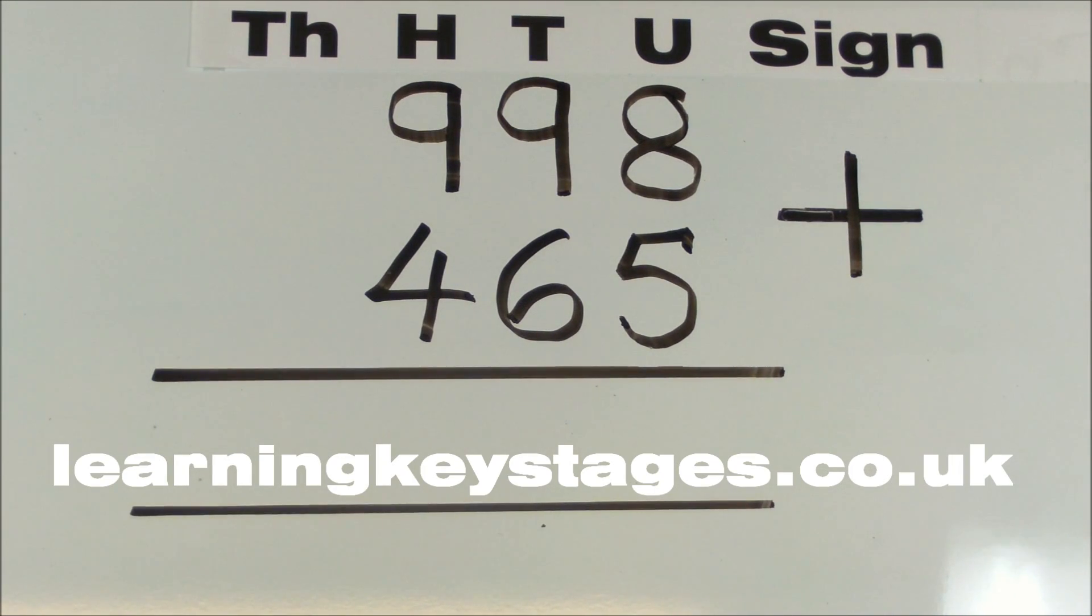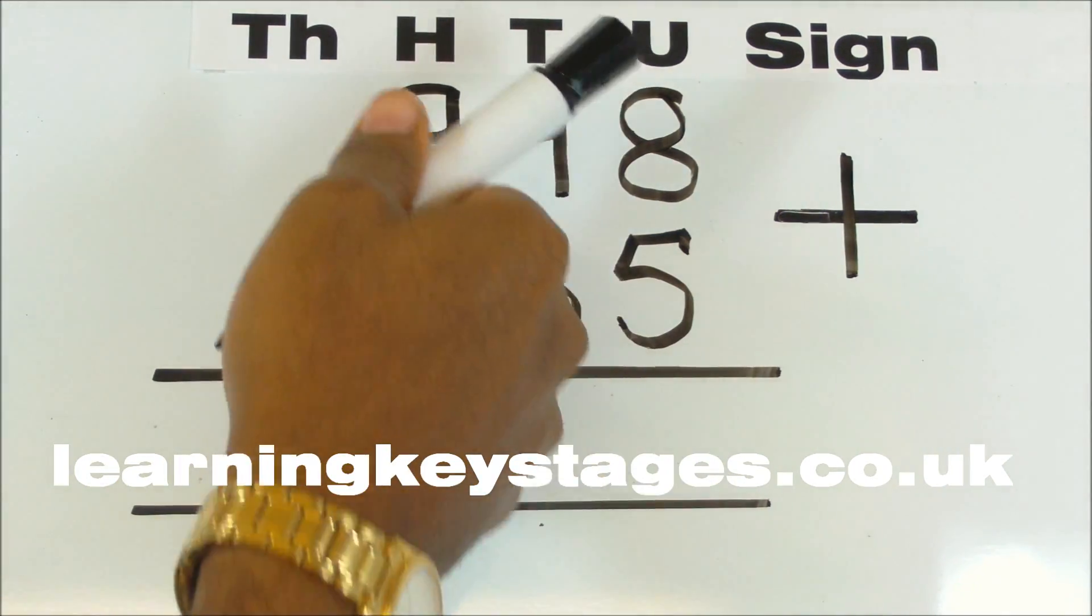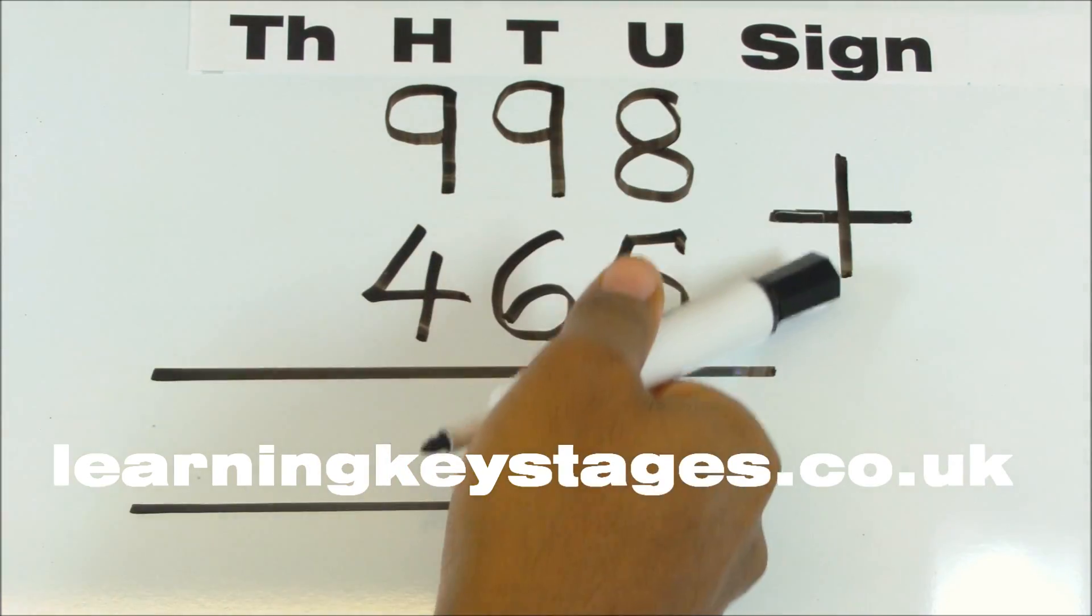This is an example of whole number integer addition. Laying out the sum with the thousands, hundreds, tens and units columns and the sign on the side here.